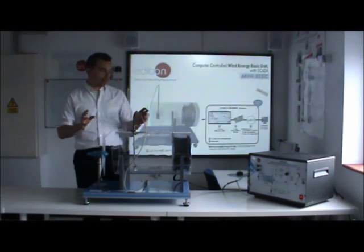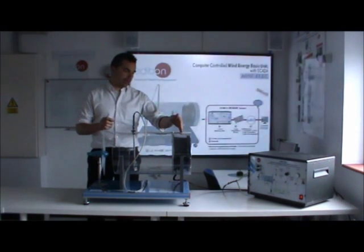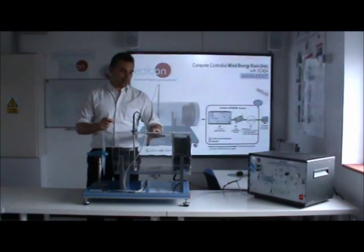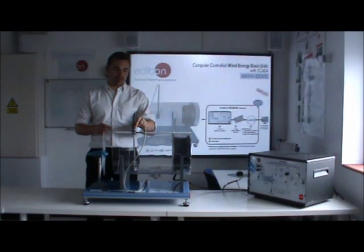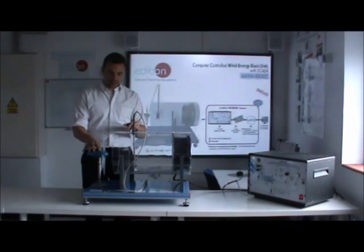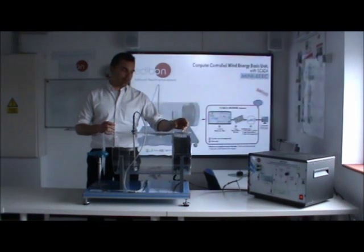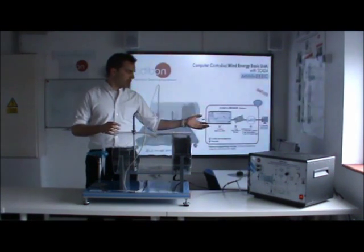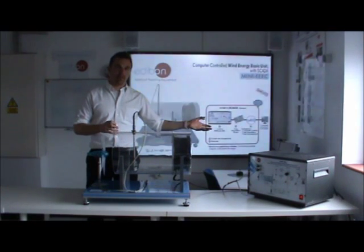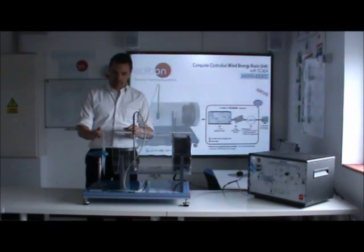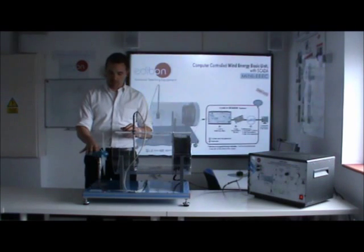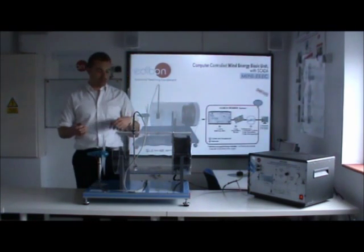The unit itself consists of an air fan, a wind tunnel, an air speed sensor, and a wind turbine. The user is able to adjust the speed of the airflow using the axial fan, which is controlled via the computer system, and they are able to change the number of blades on the wind turbine anywhere from one to six.